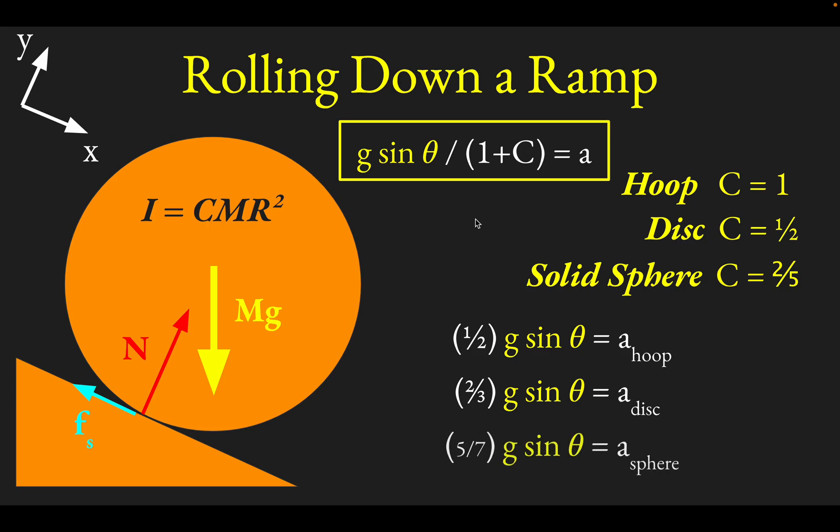And then finally, we have the fastest shape of the three, the solid sphere, where if you plug in 2 fifths, you'll get 5 fifths plus 2 fifths would be 7 fifths. And then taking the reciprocal will give you 5 sevenths. So here we are in order of—